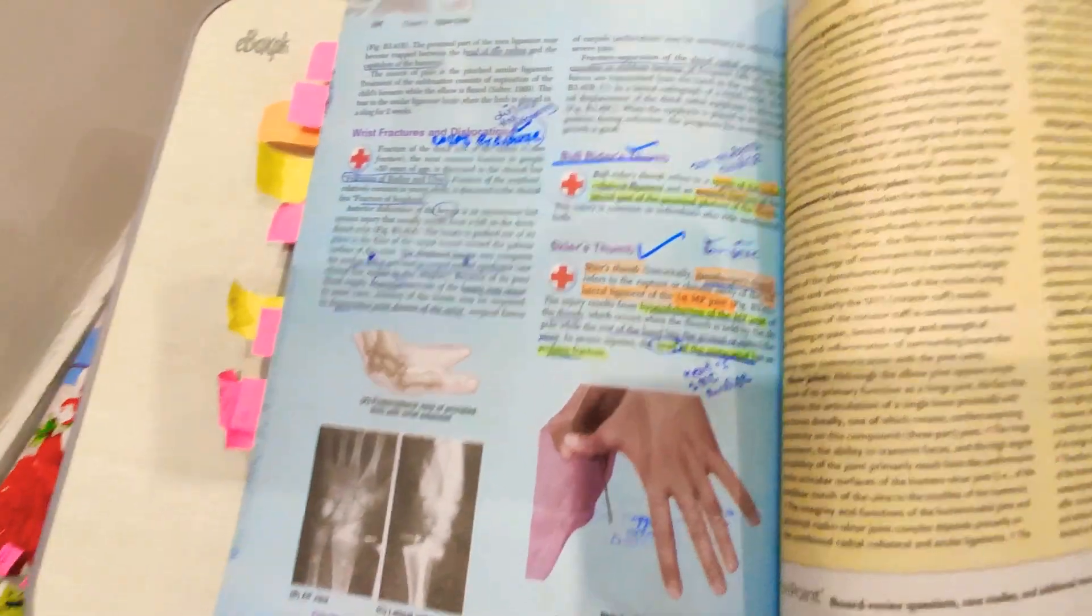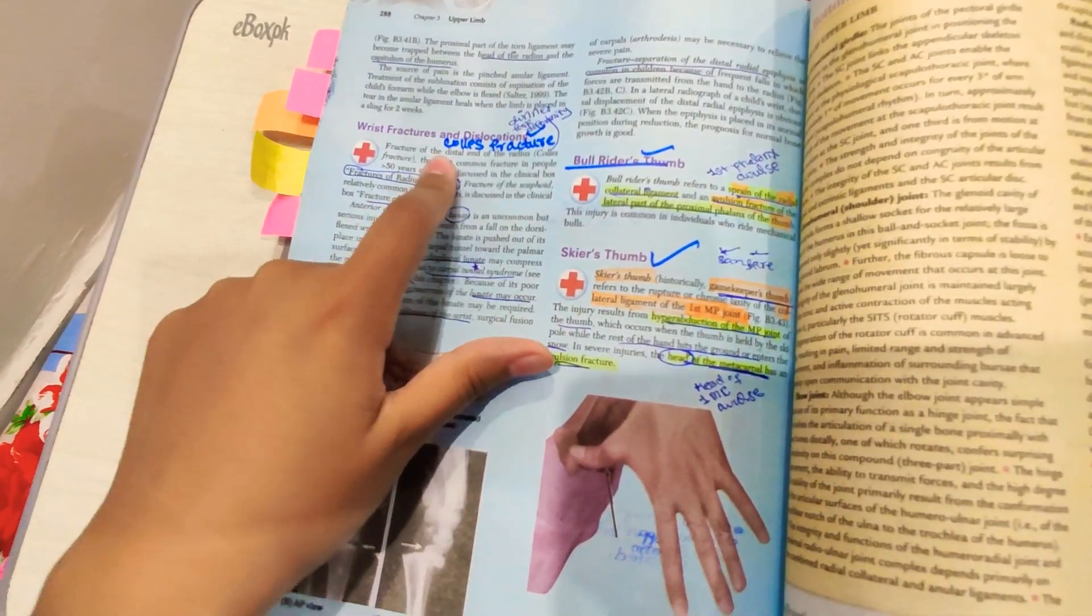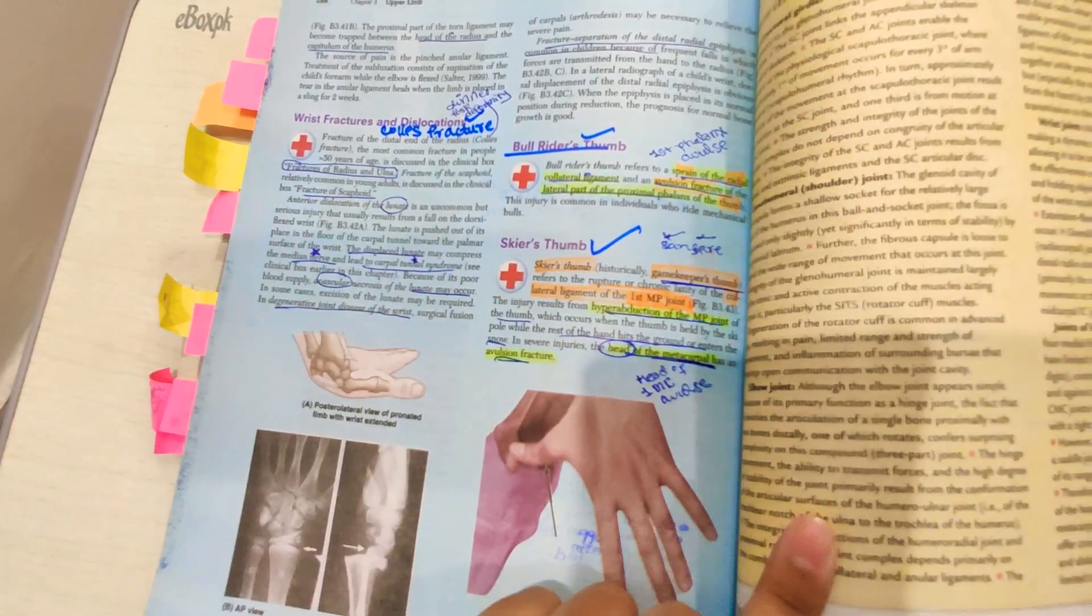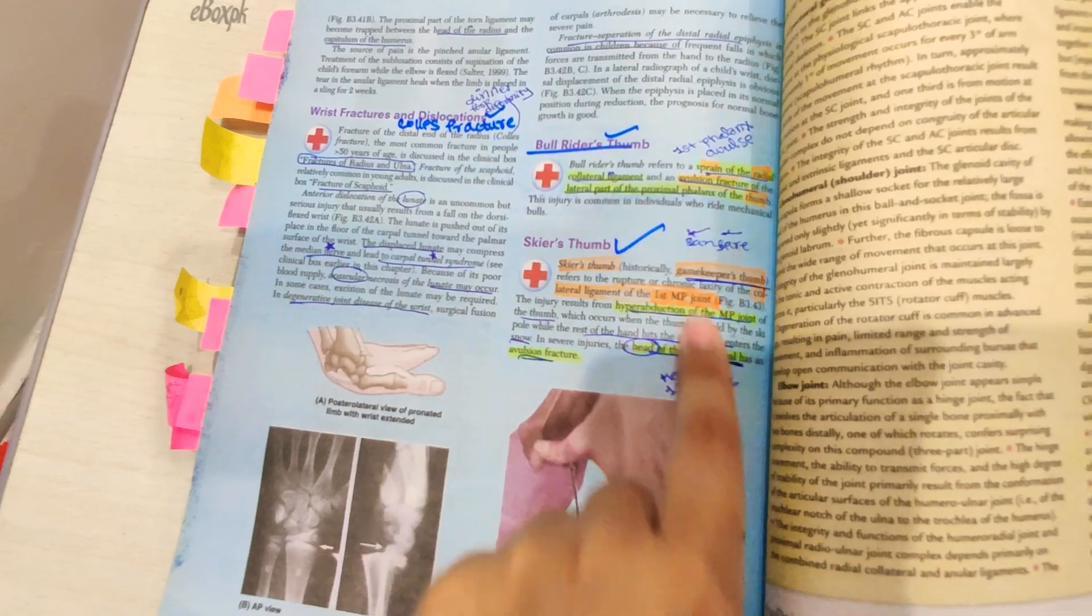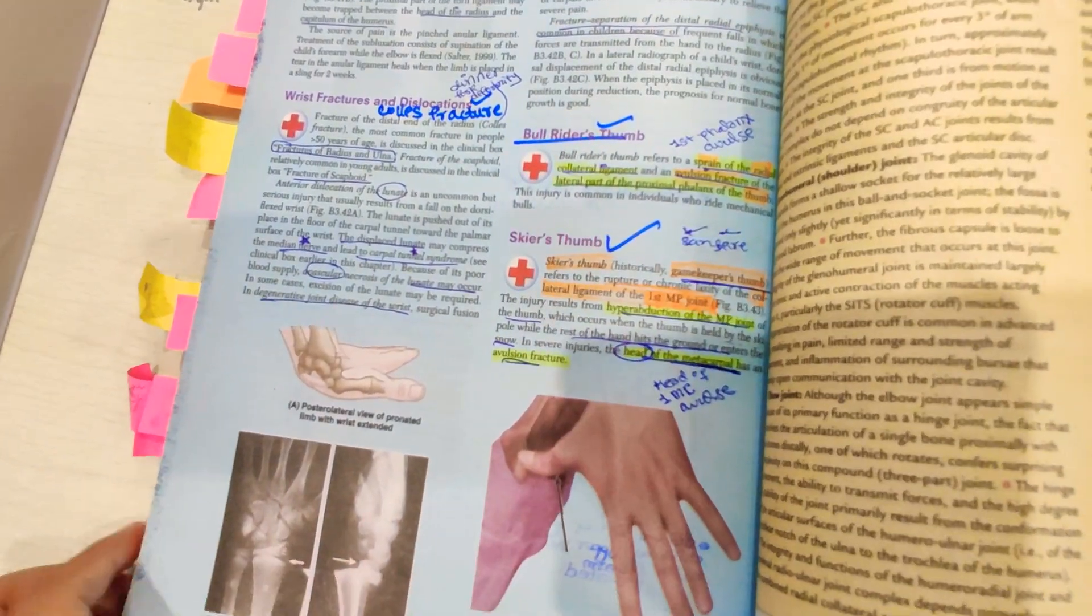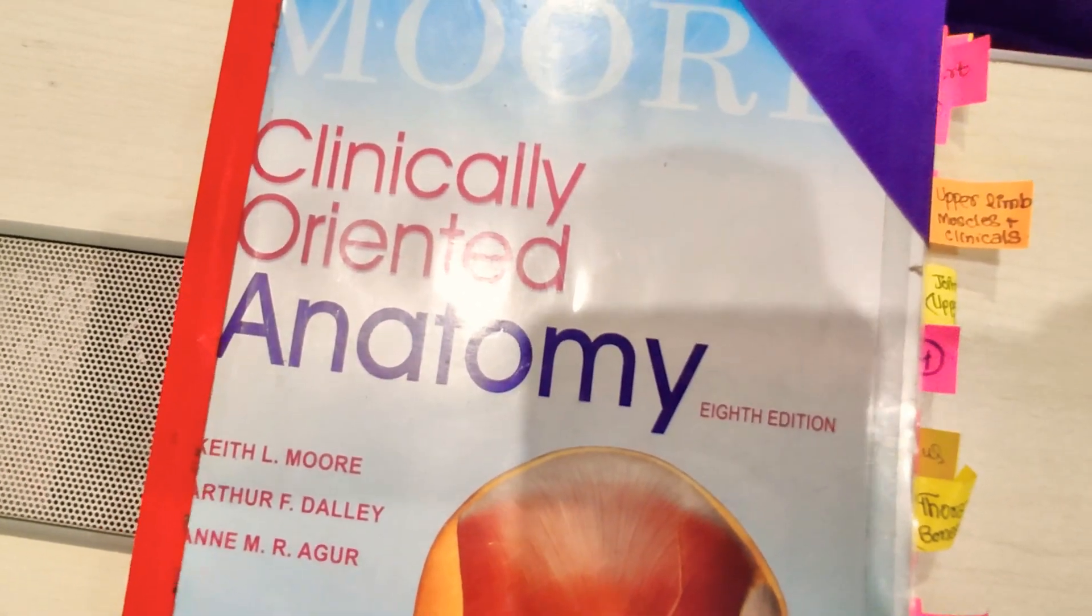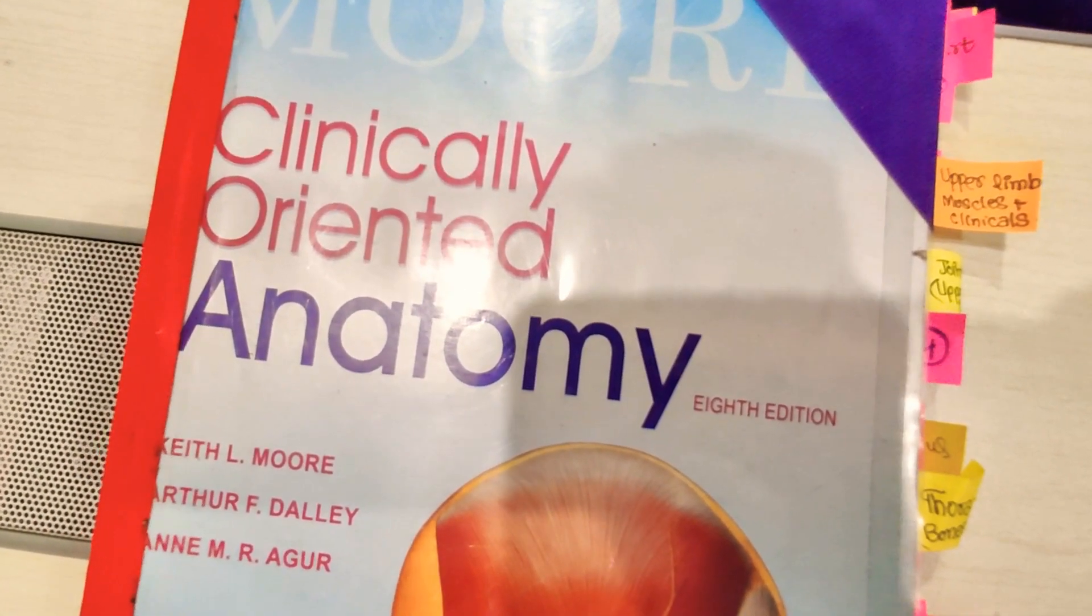And then you have to do Colles fracture - you have already done it in fractures of radius. And then bull rider's thumb and skier's thumb. It's all about clinicals of upper limb from KLM. Keep me in your prayers, Allah Hafiz, take care.